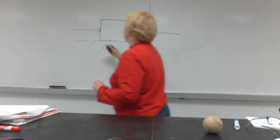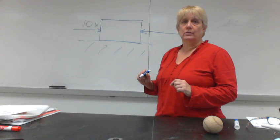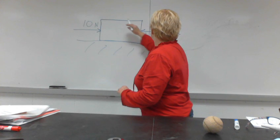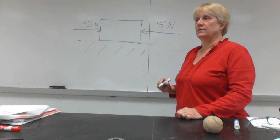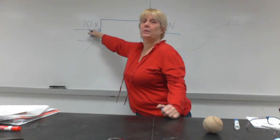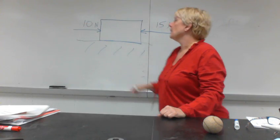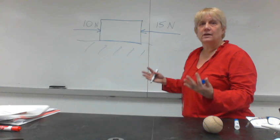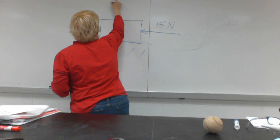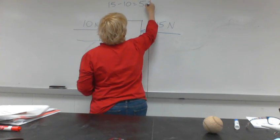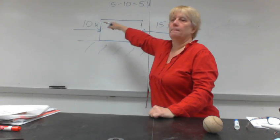So what if we push from the left with a force of 10 newtons, and we push from the right with a force of 15 newtons? Well obviously 15 is bigger than 10, so the box is going to move that way. So what is the net force? The overall net force would be 15 minus 10, or 5 newtons, and the direction would be that way.